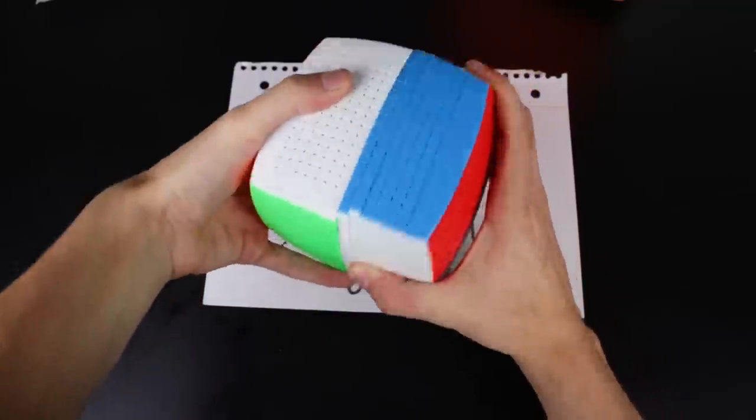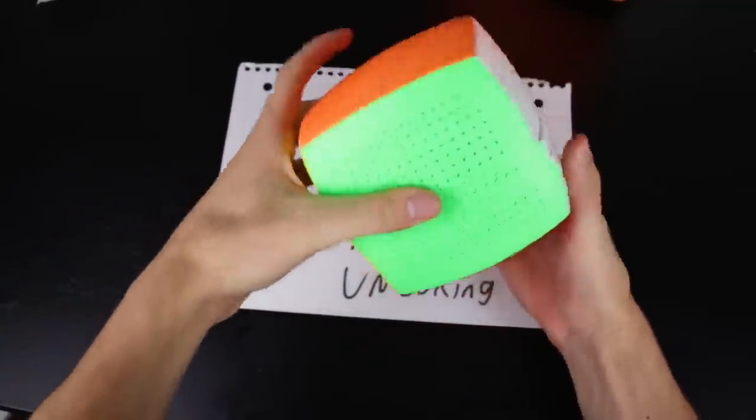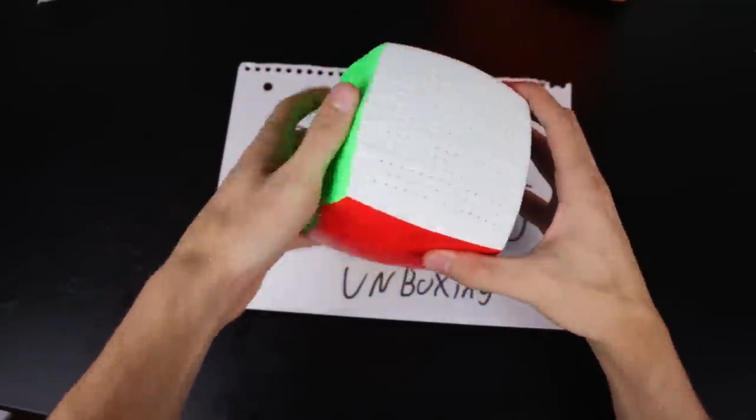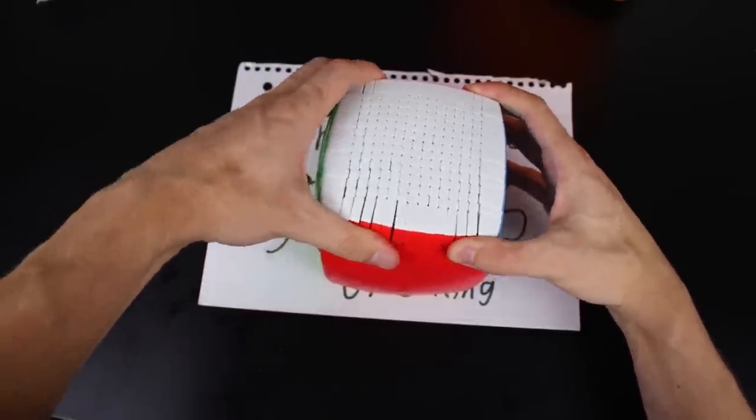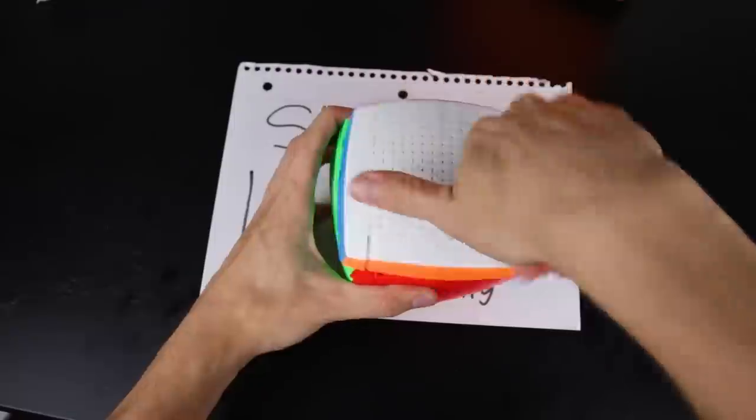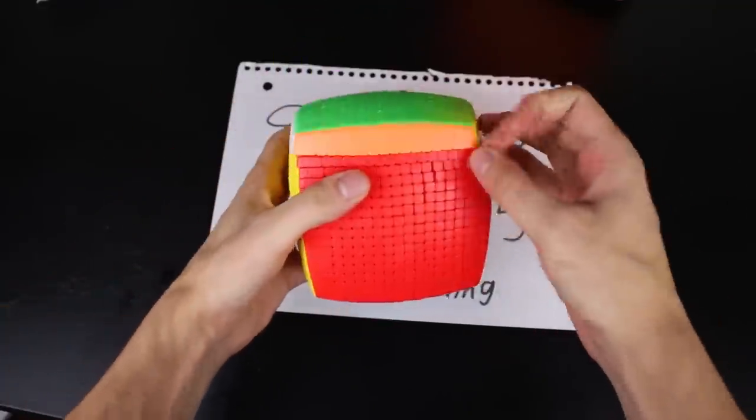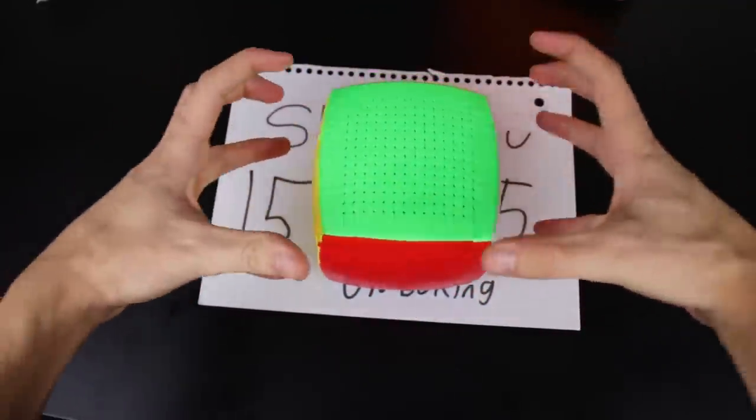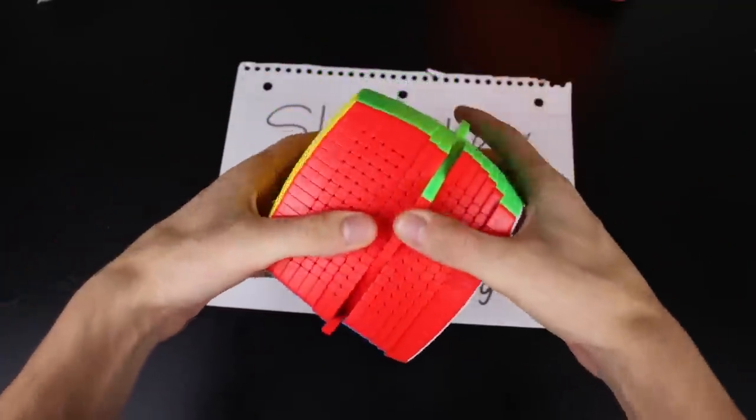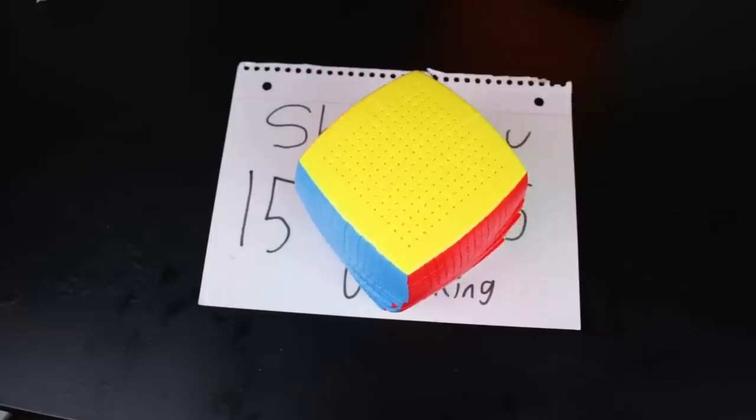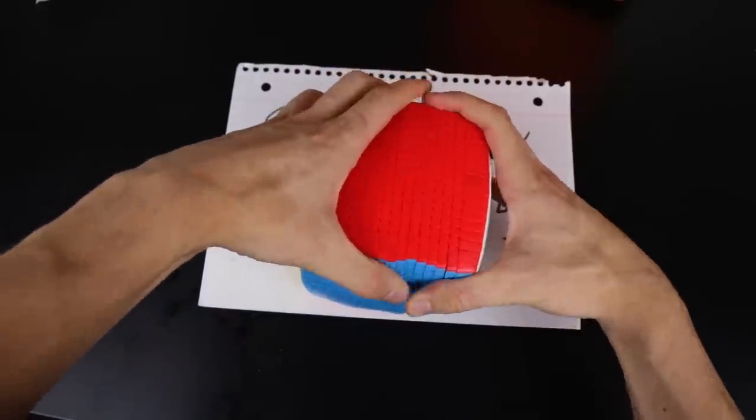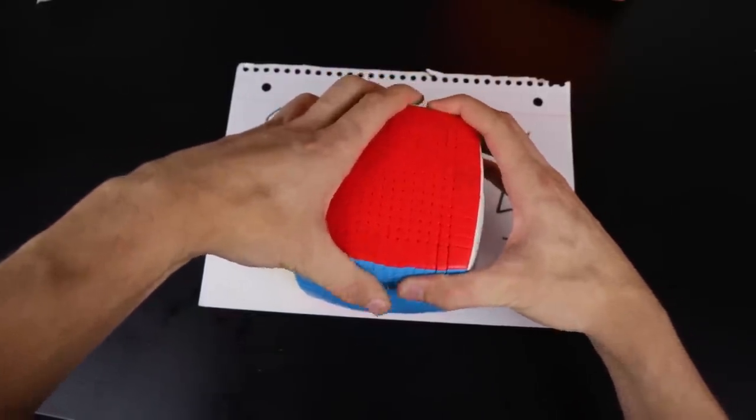So anyway, getting back into the turning of this, it does feel like maybe it's a little bit tight, but I don't think it is. I mean, it's loose. It's not super tight. It feels like it's loose. It just feels like the pieces are all coming together and it is also pretty heavy. Definitely one to set on the table while you solve. And apparently corner cutting is pretty bad, so I'm not even gonna try that again.